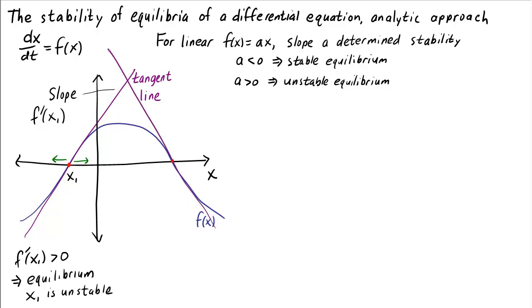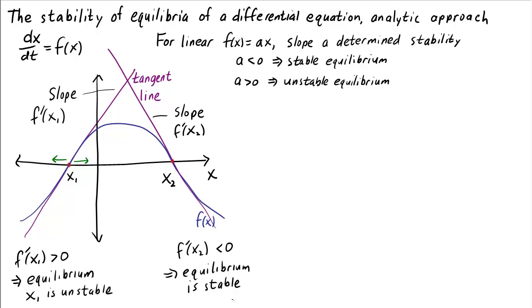The slope at a different equilibrium will be different. For a second equilibrium x2, the slope of the tangent line — which is the derivative evaluated at x2 — is negative, so the equilibrium is stable. We can verify this by looking at the sign of f on either side of x2: f is negative to the right and positive to the left, meaning that if x starts close to x2, either a little above or below, it will move toward the equilibrium.